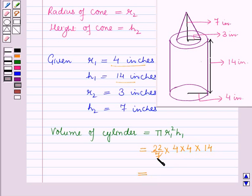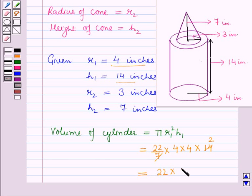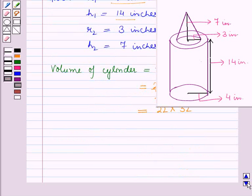So 7 into 2 is 14, and this simplifies to 22 × 32, which is equal to 704 cubic inches.